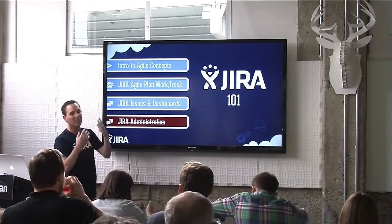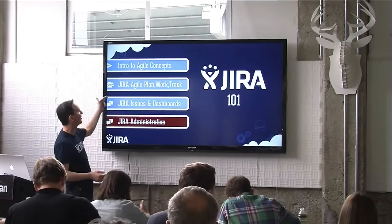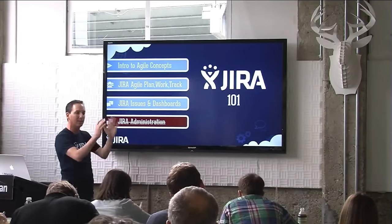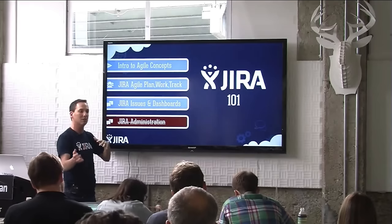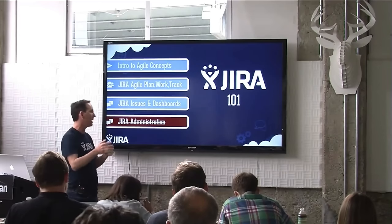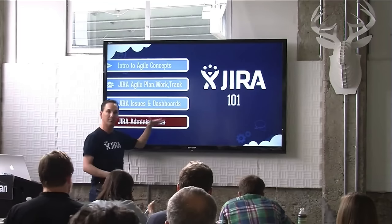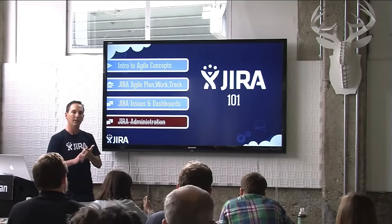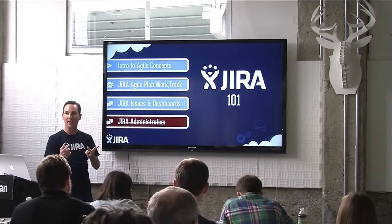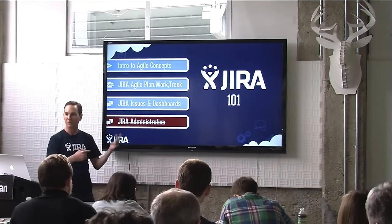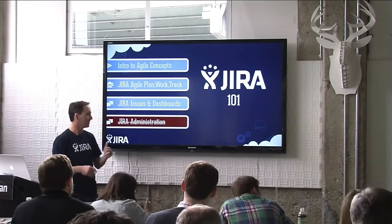We're going to talk about Jira 101 and how I've applied some of those deep-rooted personal habits to my job. We'll cover some basic Agile concepts first, then Jira Agile planning, work boards, and tracking. Then we'll talk about Jira issues, searching, and dashboards. What I'm not going to cover is Jira administration — none of you are admins on EACJ anyway, and that'll be the next class.